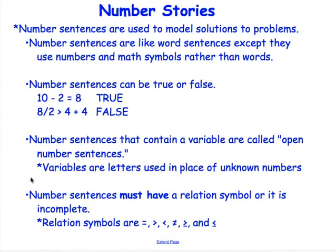I mentioned earlier that number sentences need to be complete sentences, just like word sentences do. In order to be complete, number sentences must have a relation symbol, or it is incomplete. Relation symbols are those things like equals, is greater than, is less than, is not equal to, and here's a couple you may not be familiar with. This is read is greater than or equal to, and the last one is less than or equal to. We will not use these symbols very often, but they do exist.